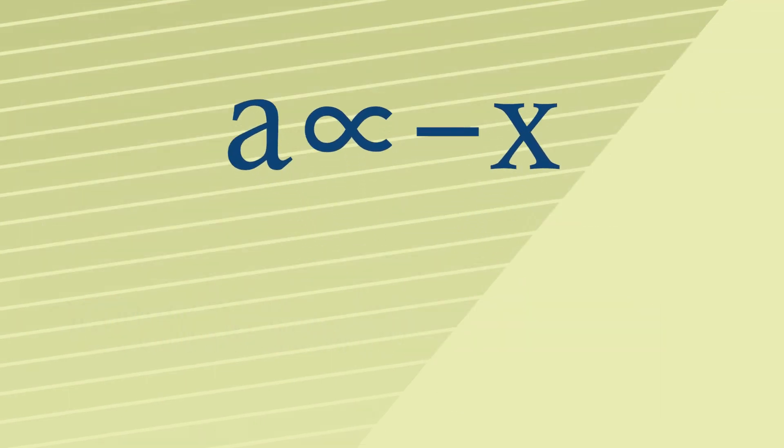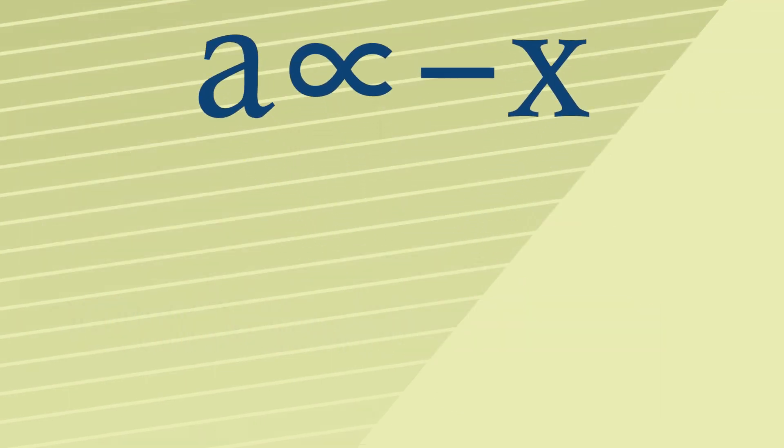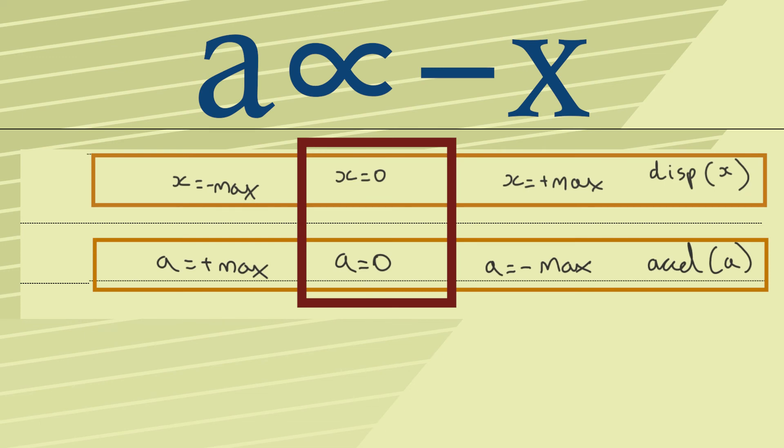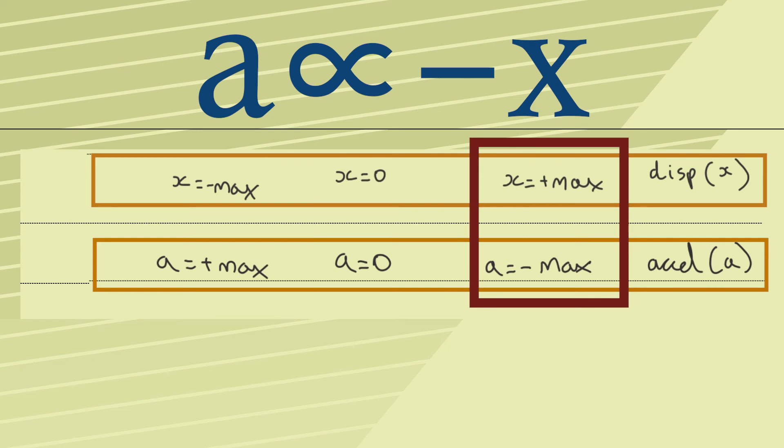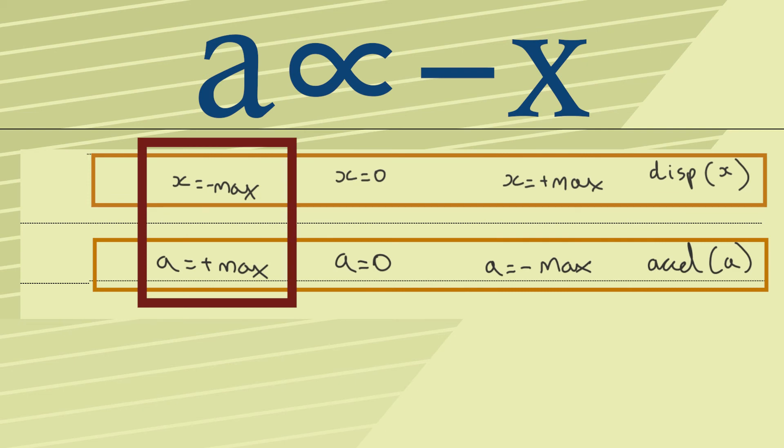This simple relationship here is the definition of simple harmonic motion and I think you'll see that it fits the previous table perfectly. When the displacement is zero according to this formula so is the acceleration. When the displacement is positive maximum the acceleration will also be maximum but negative. When the displacement is negative maximum the acceleration will be positive but maximum. In other words a is proportional to minus X.